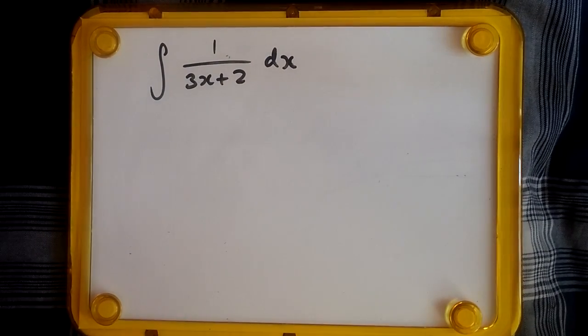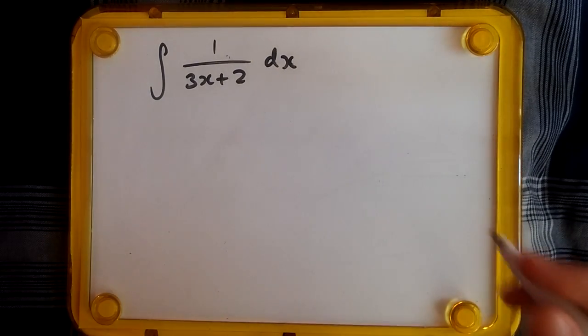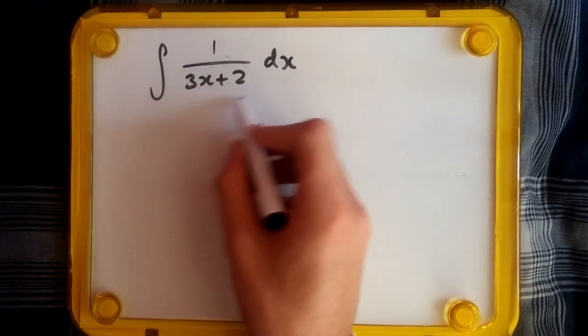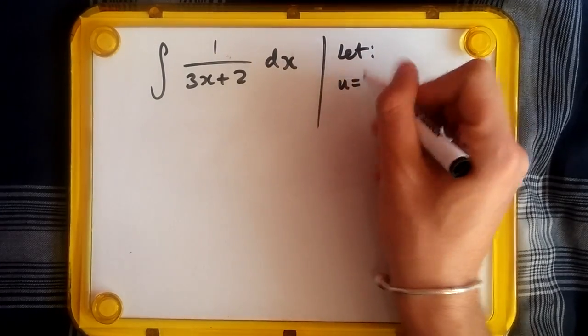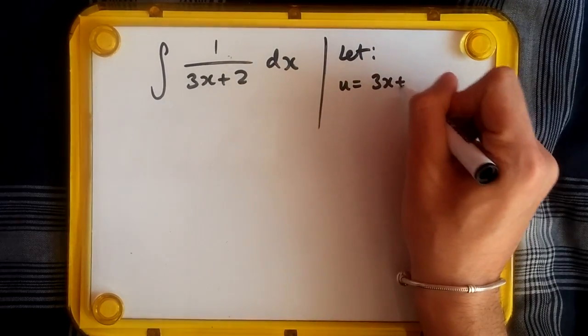So how do we term this? Well, first things first, we should always let u equal the term that we're dealing with. So I would say let u equal 3x plus 2.